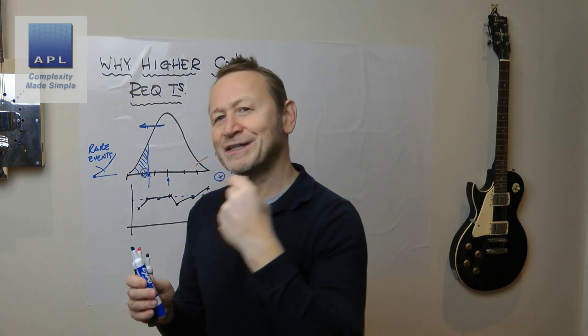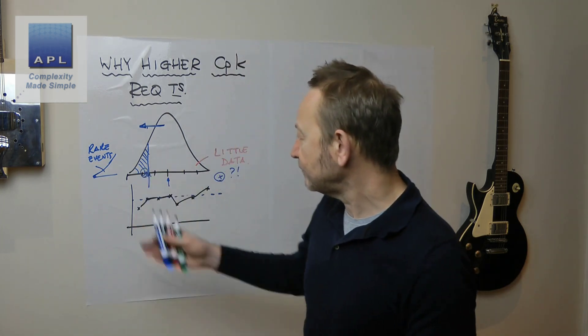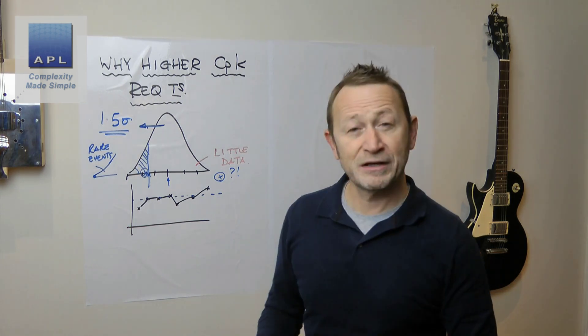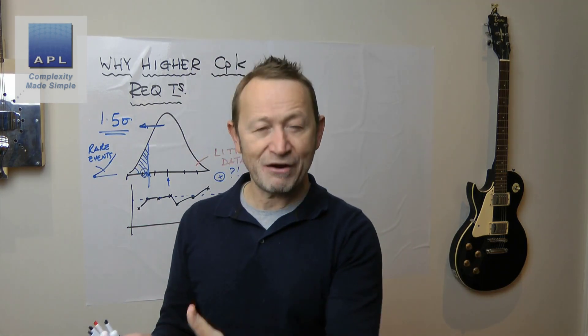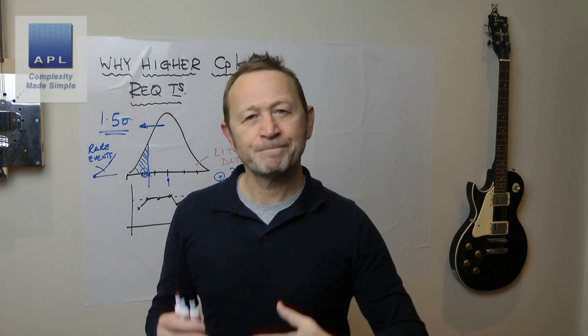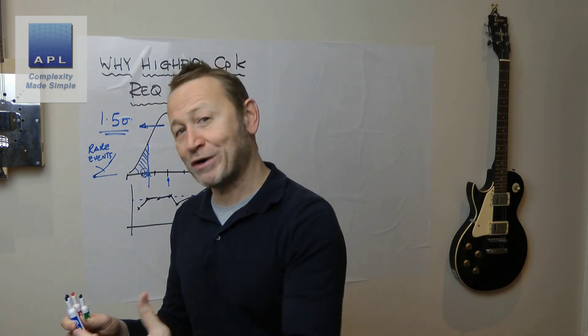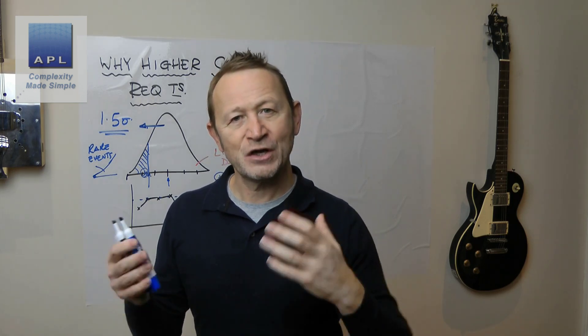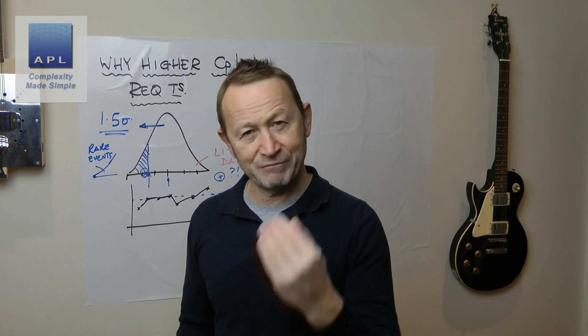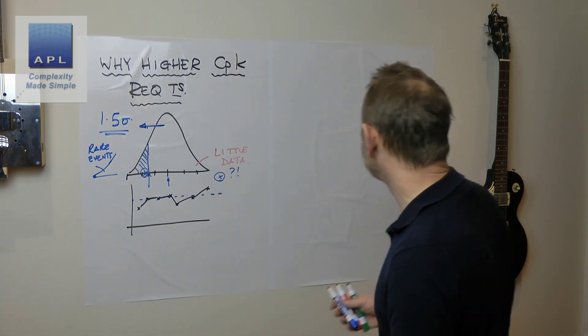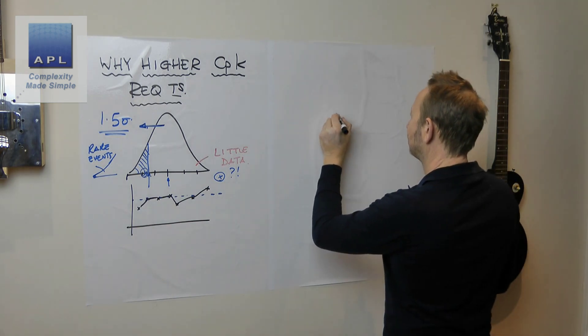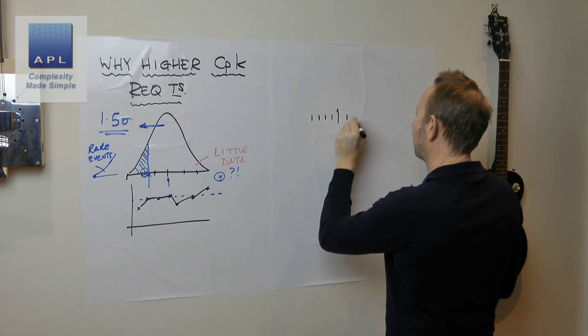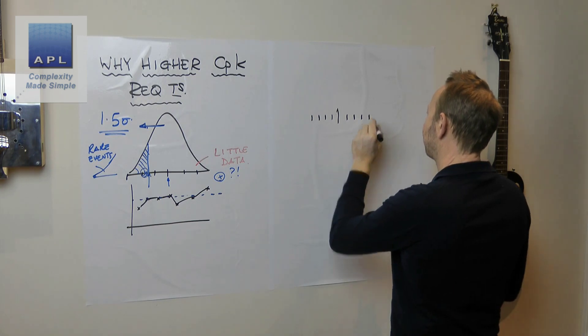If we think about that in relation to the 1.33, 1.67, or even asking for a CPK of 2, which is at the 6 sigma level, what does that mean? Let's draw some diagrams of those three scenarios.